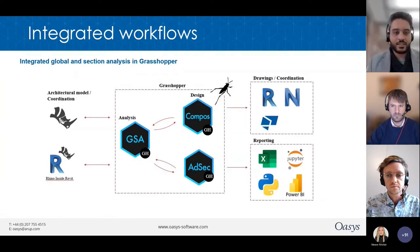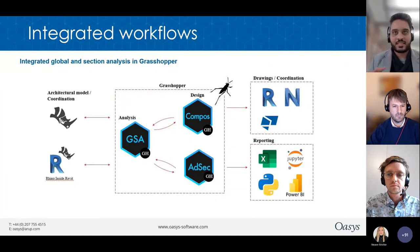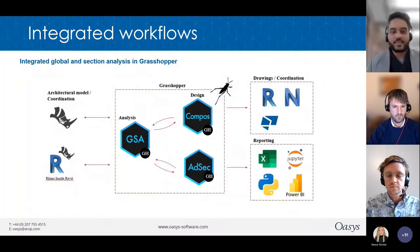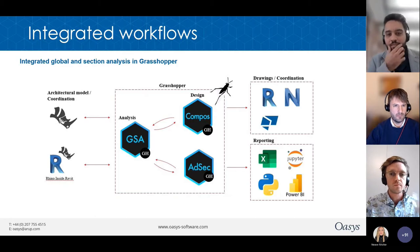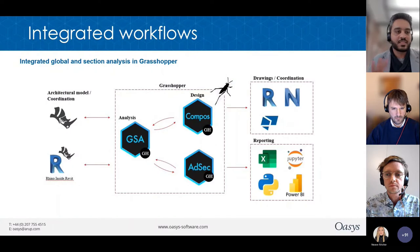Here is a big picture overview of integrated workflows using these plugins. Most scheme design and early-stage detail design can be fully done inside Grasshopper. The general idea is that you do a global analysis with GSA Grasshopper, which informs AdSec Grasshopper for cross-section analysis, which then informs the global analysis model again. As you move to more advanced stages of detailed design, you can take the models made in Grasshopper and do more advanced analysis inside the respective main software, thanks to a bi-directional link between the plugins and their corresponding main software.